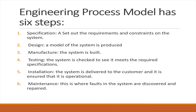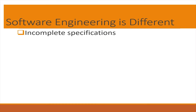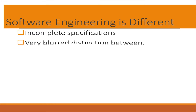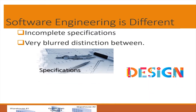Software engineering, on the other hand, is slightly different from the engineering process model. Normally, specifications are incomplete. Secondly, there is a very blurred distinction between specification, design and manufacture.